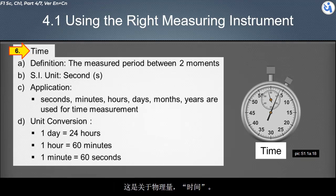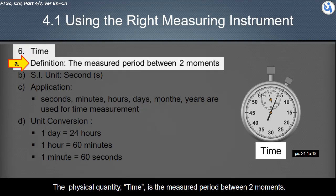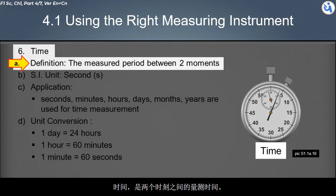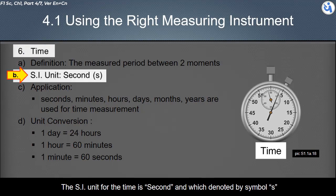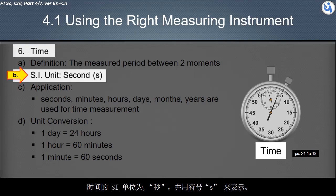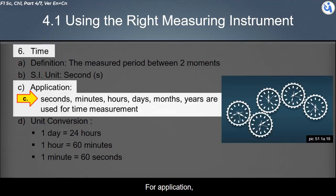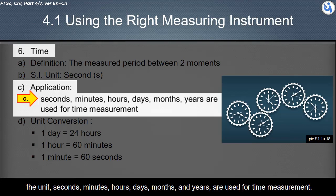This is about the physical quantity time. The physical quantity time is the measured period between two moments. The SI unit for the time is second, and which denoted by symbol S. For application, the unit seconds, minutes, hours, days, months, and years are used for time measurement.